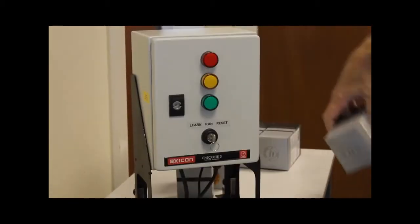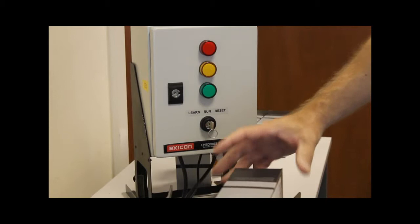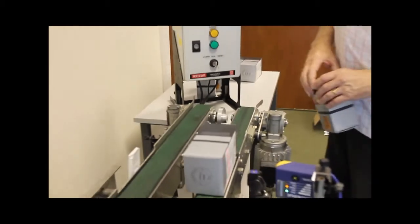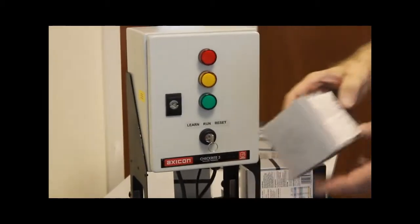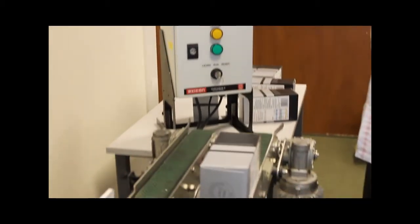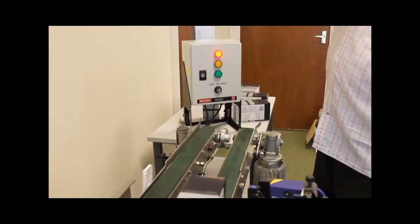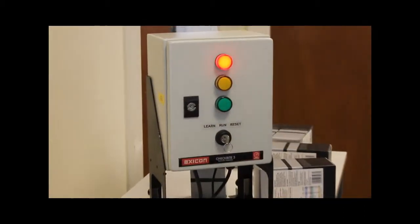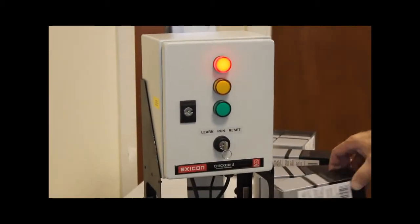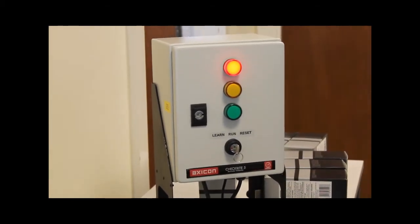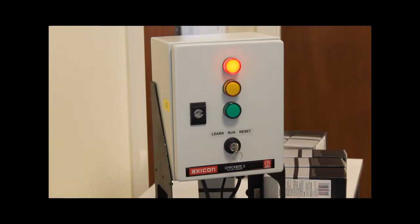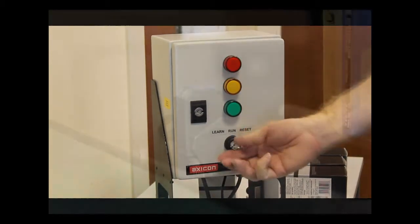Now every product that passes through after that passes with a green light. But if we put a different product through we have a rejection. As you can see this displays a red light. The output can then be used to stop the line, sound an alarm, or knock the product off the line altogether.